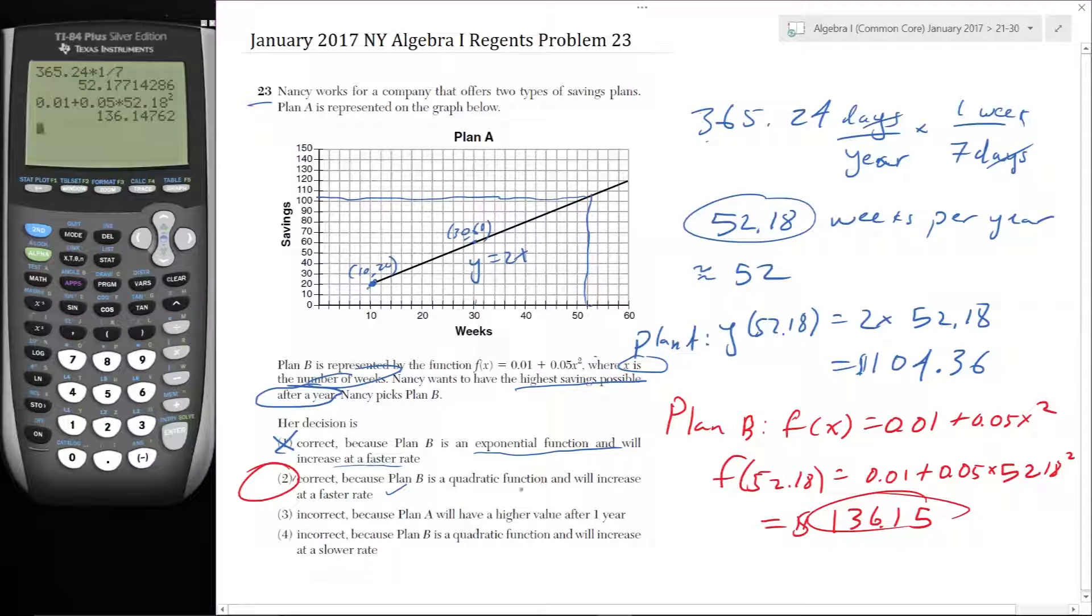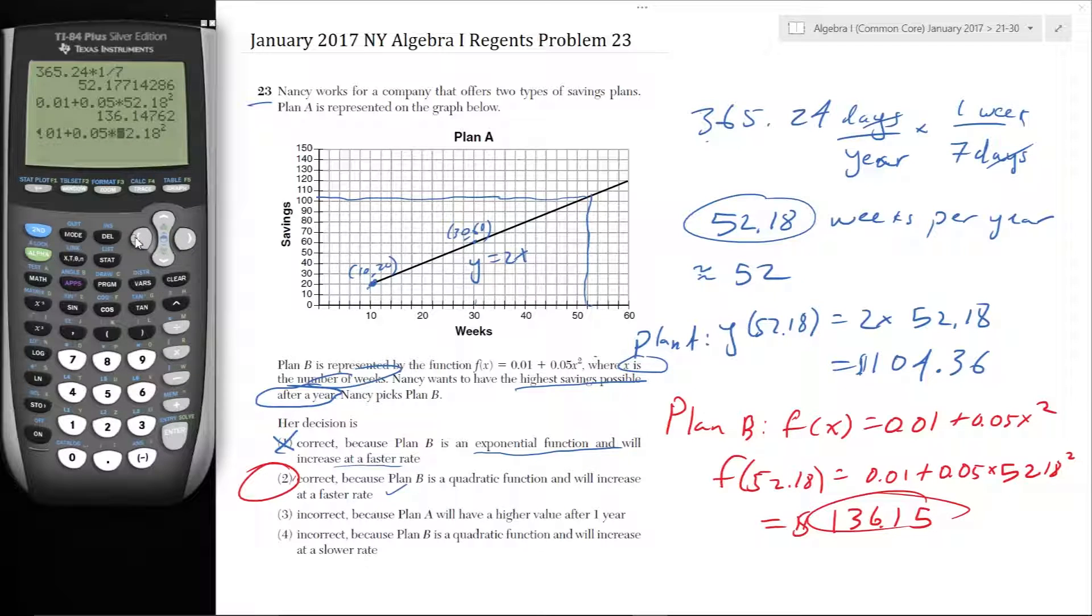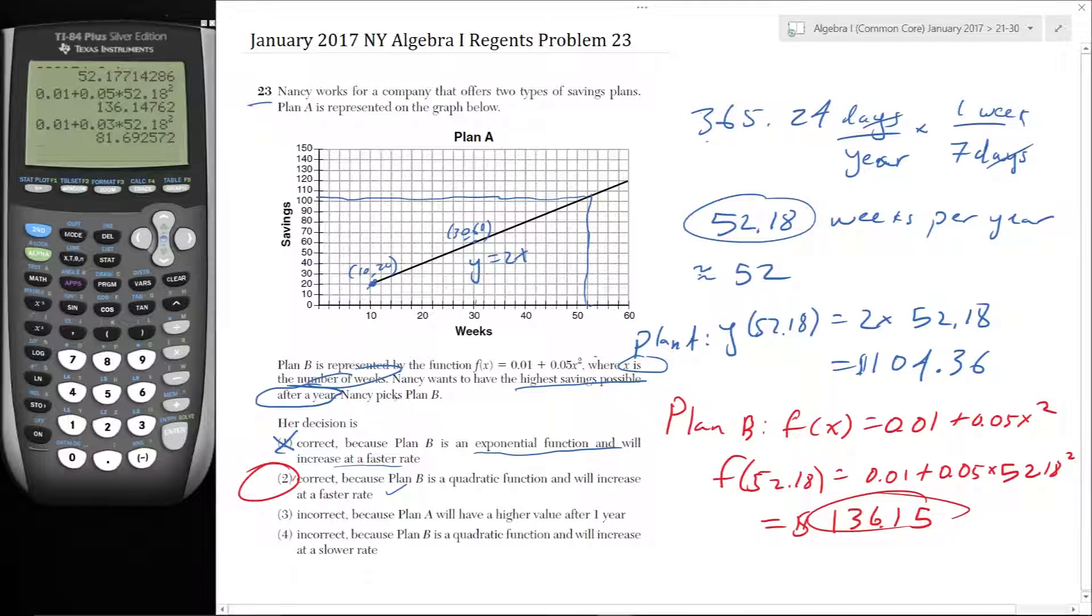Again, my complaint is that it's not enough to say that this is a quadratic function. Like, for example, if this 0.05 was replaced by 0.03, the balance would have been 81. So it's not even the fact that the function is quadratic. The problem is that the value is higher. That's the reason that she made the correct choice. She chose plan B. So she made the correct choice.